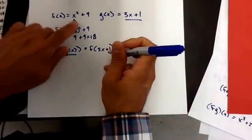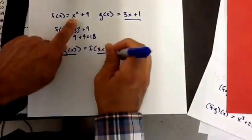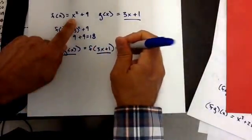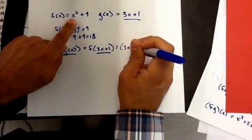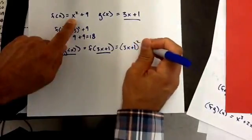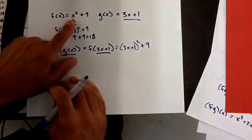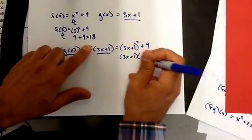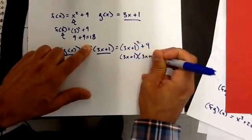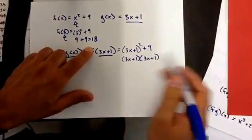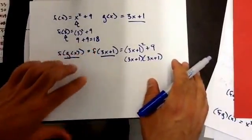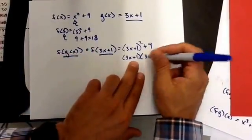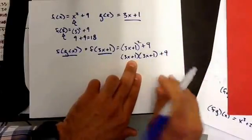That means instead of x in this function rule up here, I'm going to put 3x plus 1. So I'm going to put (3x plus 1) squared plus 9. (3x plus 1) squared means (3x plus 1) times (3x plus 1). This is where most of you guys make your mistakes, because you just do 3x squared plus 1 squared. That's wrong. That's devil math. Don't do that. So I'm going to rewrite it twice. I still have the plus 9.